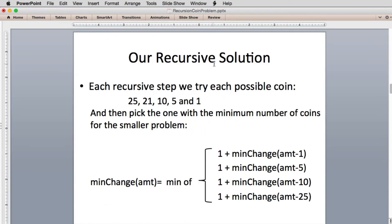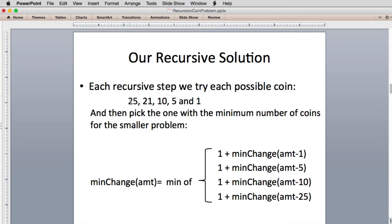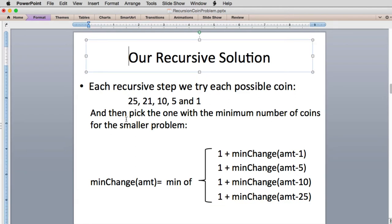So we're going to use a recursive algorithm. The idea is we're going to find which coin to choose at each step that gives us the best solution. Each recursive step, we're going to try the possible coins, starting from the largest to the smallest. But we're going to try all of them. We're not going to just settle with the largest. That would be the greedy solution.